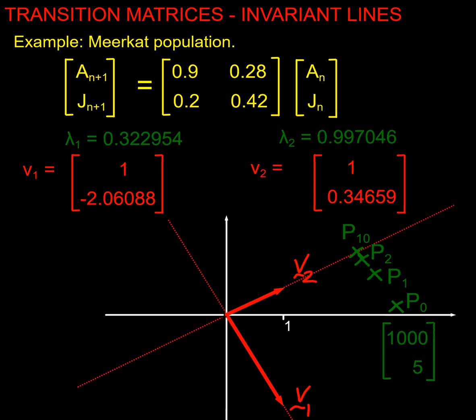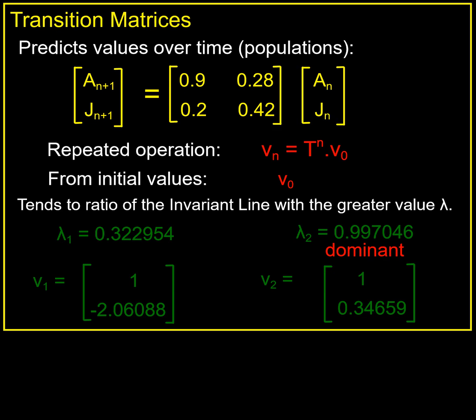There we have it then. If we want to know what happens to one of these transition matrices over an extended period of time, we can find our invariant lines, we can find which has the dominant multiplier. This one is much larger than that, and therefore we can see that all our population is going to tend to that ratio. It might increase if it's in growth or decrease if it's in reduction, but it's going to tend to that ratio. Interesting idea, best of luck.